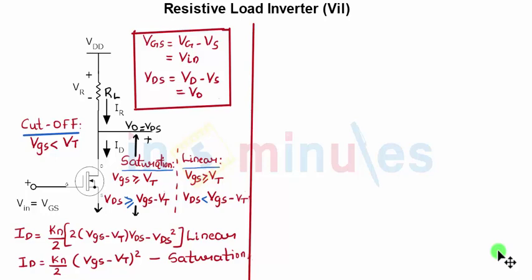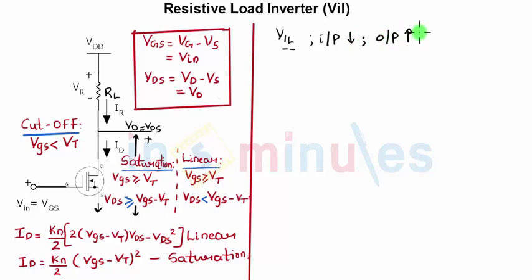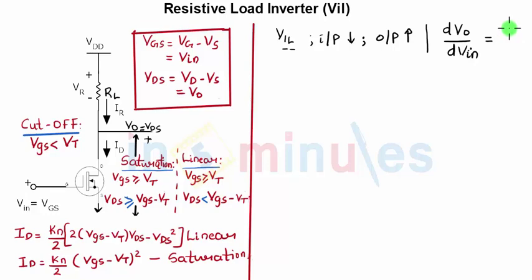Welcome to 'In 5 Minutes.' The agenda of this clip is to understand how to find the value of VIL for a resistive load inverter. VIL is nothing but input low, which means — because it's an inverter — the output is high. VIL is the point on your voltage transfer characteristic where the slope is equal to minus 1, meaning dVout/dVin is equal to minus 1.